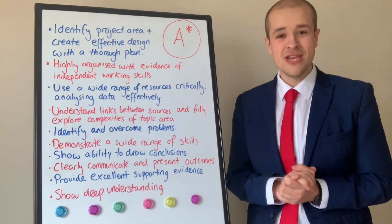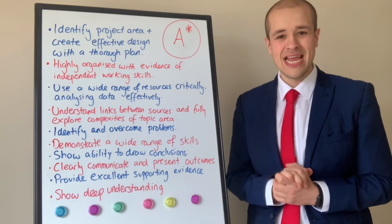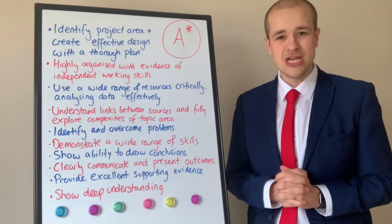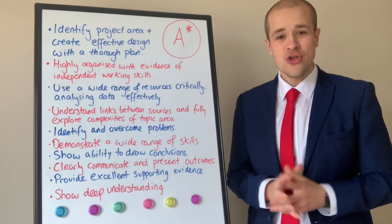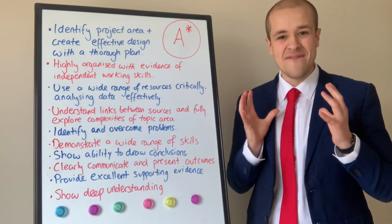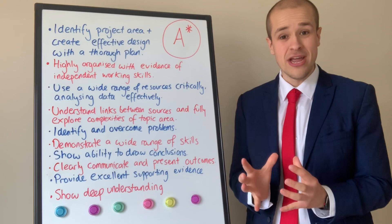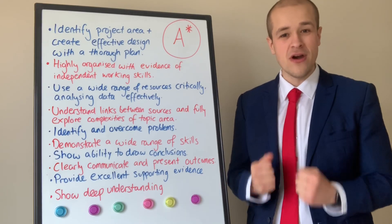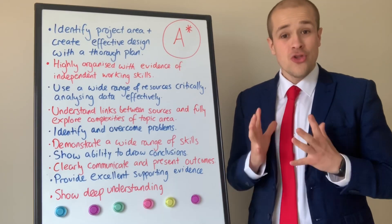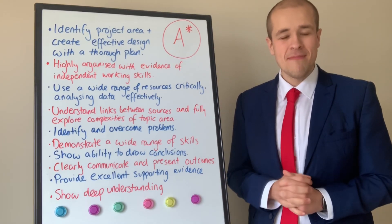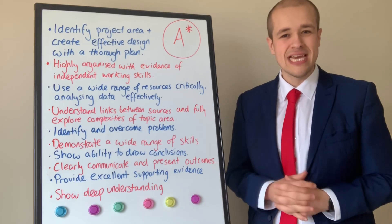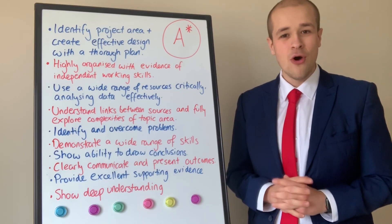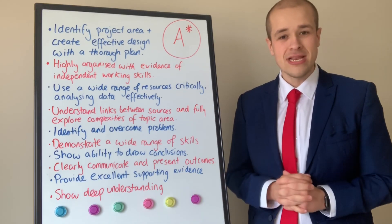The first thing you need to do to get an A-star in the EPQ is identify your project topic area, create an effective design for your EPQ product, and create a really thorough plan. You're going to get a significant amount of marks in the record of initial ideas for this element of the A-star grade descriptor.